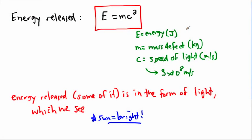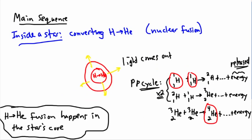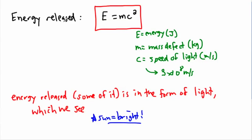We just looked at the process at work in the center of a star that's on its main sequence. That's when it's converting hydrogen to helium, and each time it does that, there's some energy released. That energy is in the form of E equals MC squared, where E is the energy, M is the mass, and C is the speed of light.